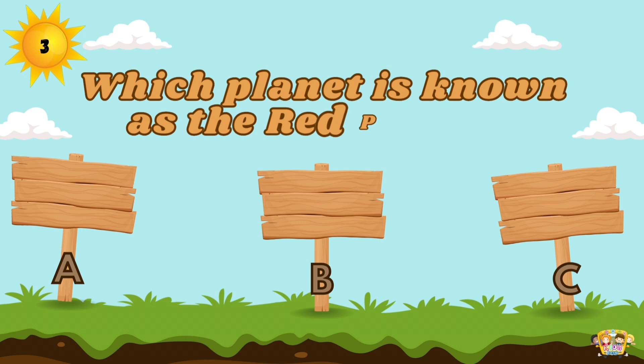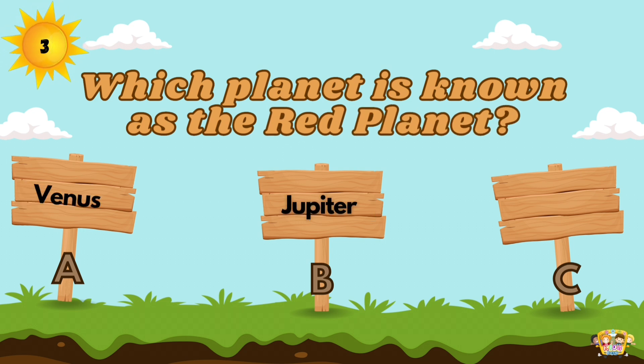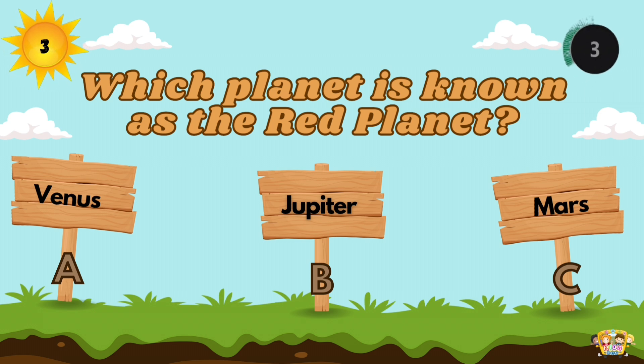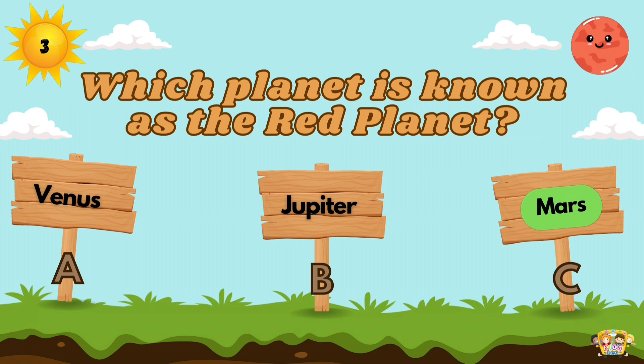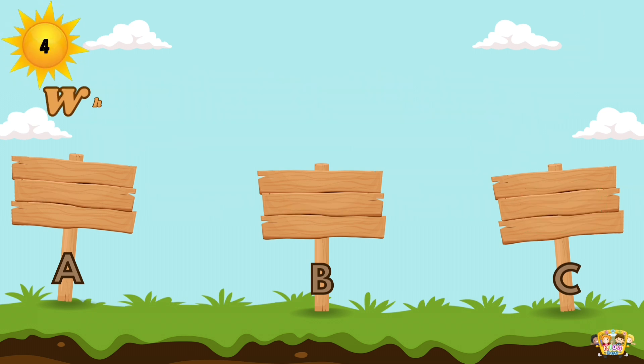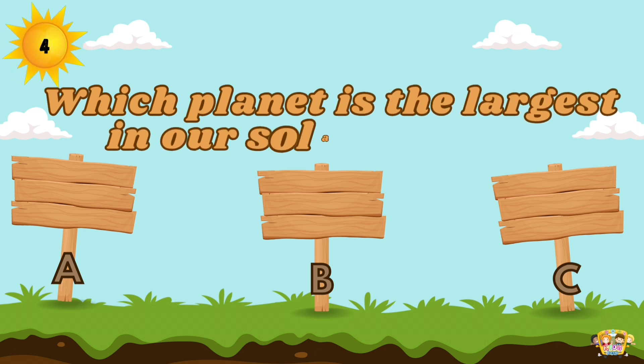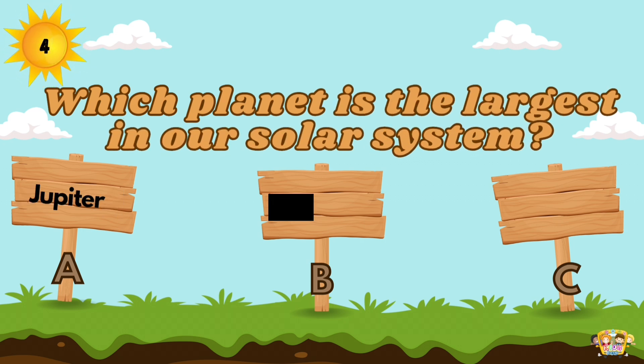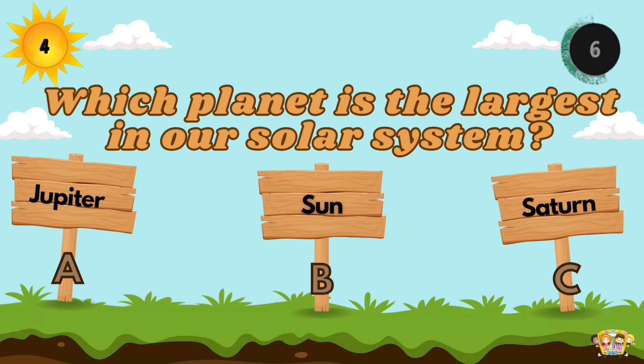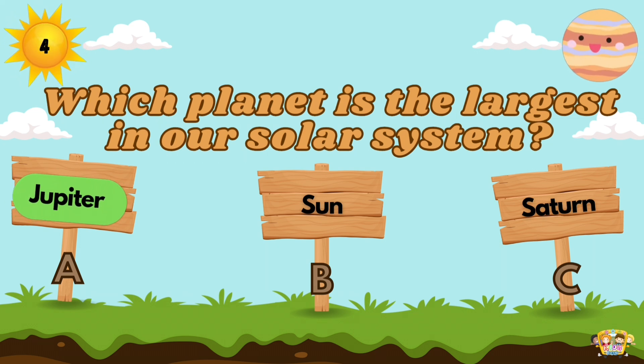Which planet is known as the red planet? Mars is red due to the iron oxide. Which planet is the largest in our solar system? Jupiter is the largest planet in the solar system.